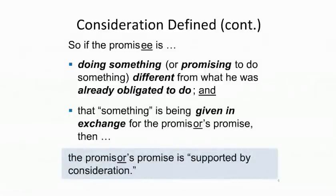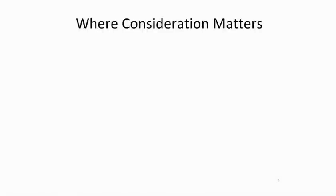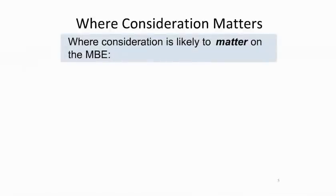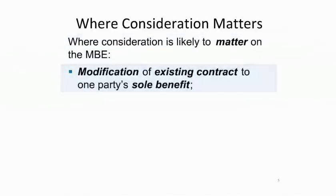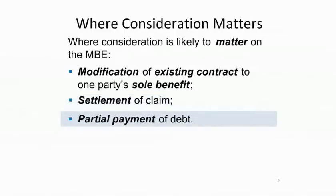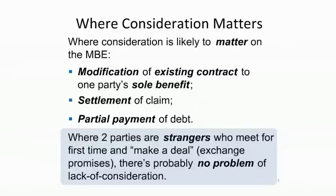In fact, both requirements sound pretty easy to meet. The first requirement — that there be some sort of exchange — doesn't sound like it would be a problem very often. And the second requirement, that there be an act, forbearance, or return promise, also doesn't sound very demanding. Most consideration problems on the multistate involve some sort of promise to modify an existing contract, to settle an existing claim, or to make partial payment of a pre-existing debt. Where two parties are strangers who get together in a deal from scratch, it's very unlikely their initial deal will pose a consideration problem.